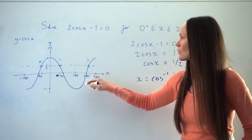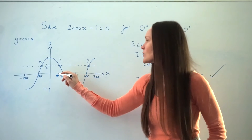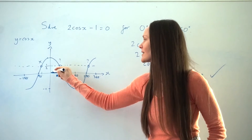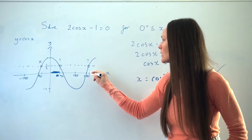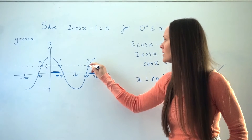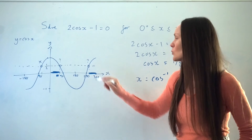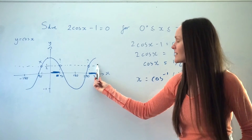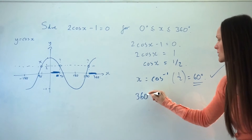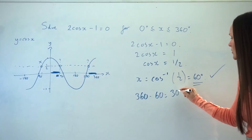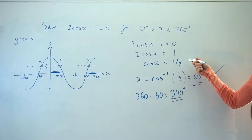If we take just this section of the graph y equals cos x, it's symmetrical. This is the line of symmetry. So if this distance here is 60 degrees from the y-axis to our intersection point, then the distance from 360 to our other solution on the right-hand side is also 60 degrees. To find the x-coordinate of that second point, we start at 360 and go backwards 60 degrees, i.e. subtract 60 degrees, giving us 300 degrees. That is the x-coordinate of this intersection point and so that is another solution.